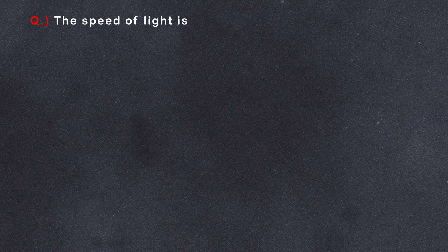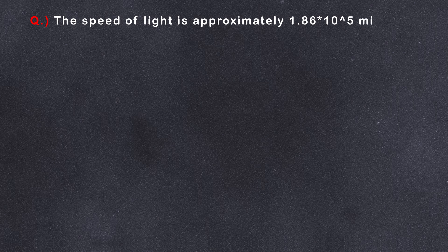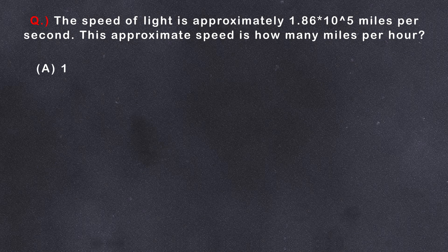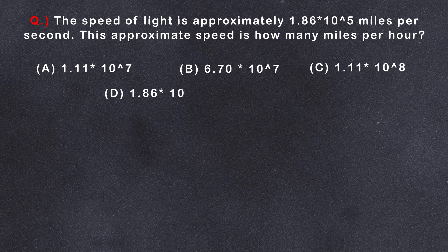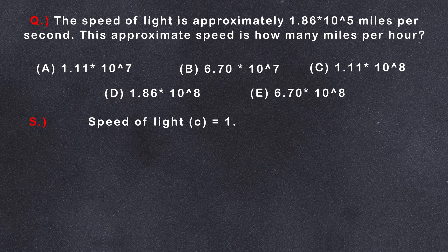The speed of light is approximately 1.86 × 10^5 miles per second. This approximate speed is how many miles per hour? (A) 1.11 × 10^7 (B) 6.7 × 10^7 (C) 1.11 × 10^8 (D) 1.86 × 10^8 (E) 6.7 × 10^8